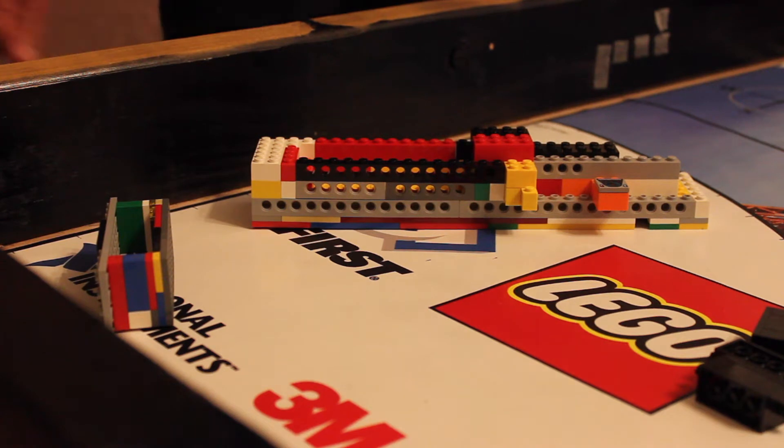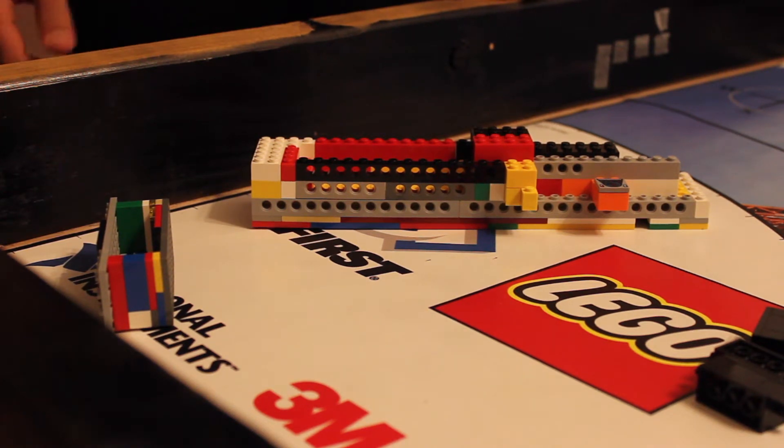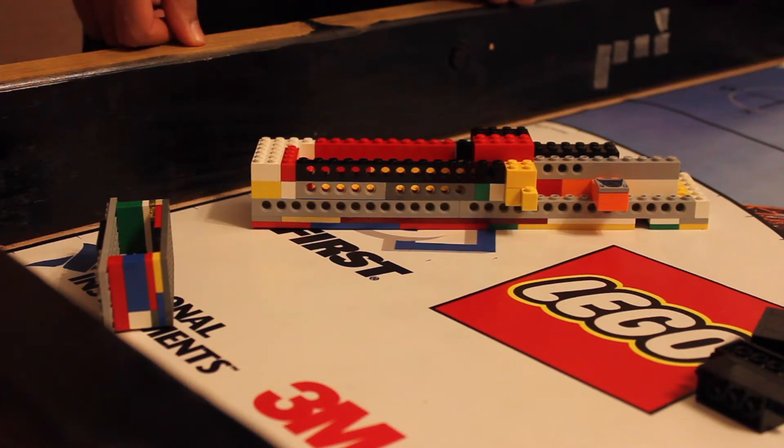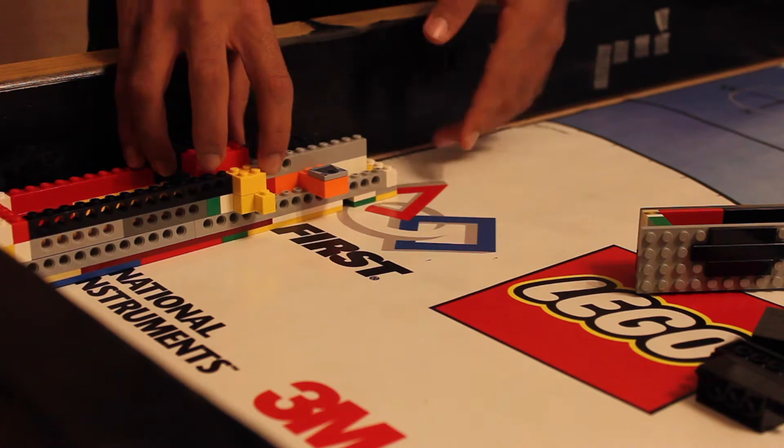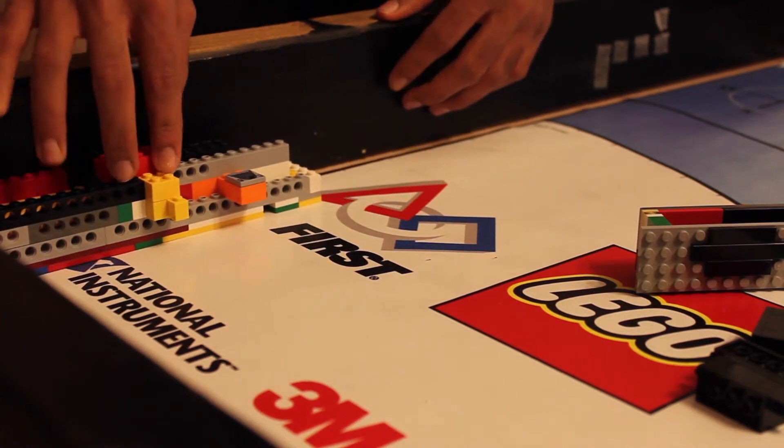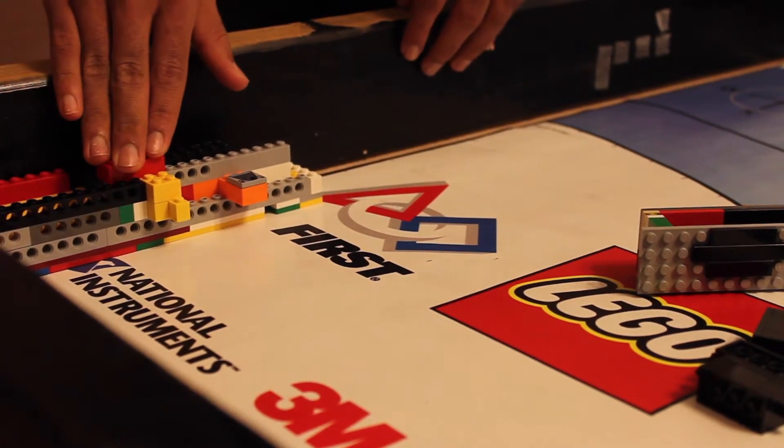Hi guys, this is Robotic Revolution back again with FLL Tips and Tricks, and today we're going to be talking about jigs. So a jig is basically an alignment that you put in the base to make sure that your robot starts in the same position every time.